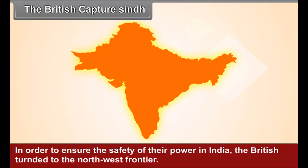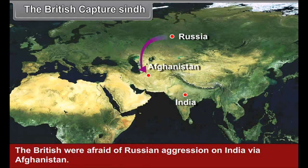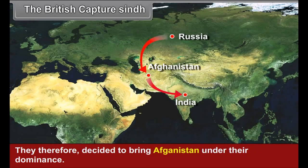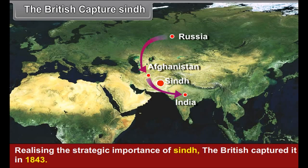In order to ensure the safety of their power in India, the British turned to the northwest frontier. The British were afraid of Russian aggression on India via Afghanistan, and therefore decided to bring Afghanistan under their dominance. Roads leading to Afghanistan passed through the province of Sindh. Realizing the strategic importance of Sindh, the British captured it in 1843.